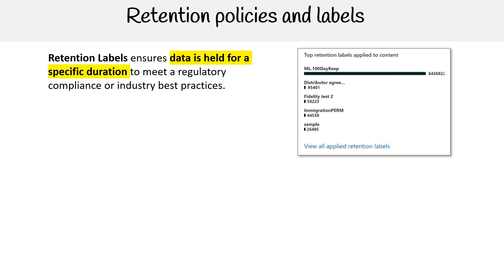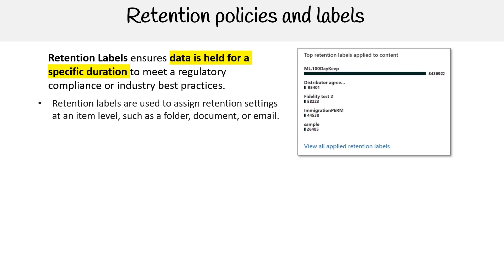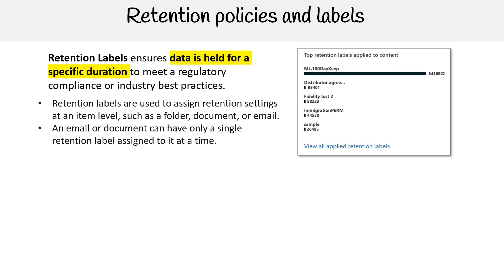Retention labels ensure data is held for a specific duration to meet regulatory compliance or industry best practices. They are used to assign retention settings at an item level, such as a folder, document, or email. An email or document can have only a single retention label assigned to it at a time. Here you can see the retention labels applied to specific content.